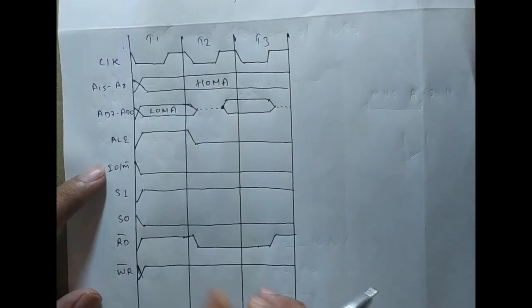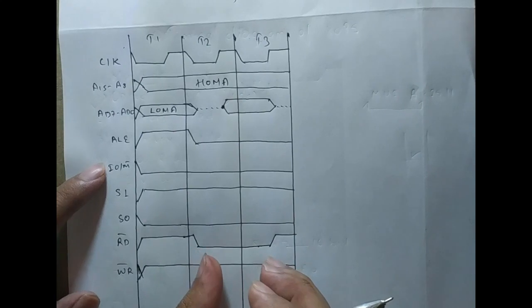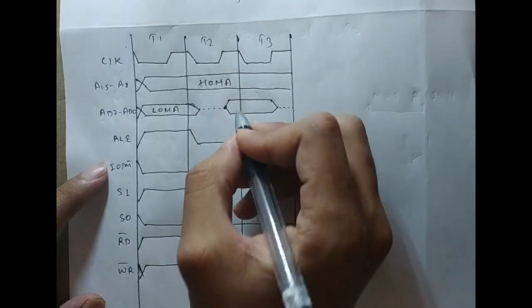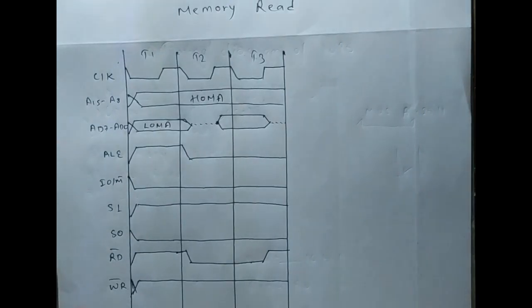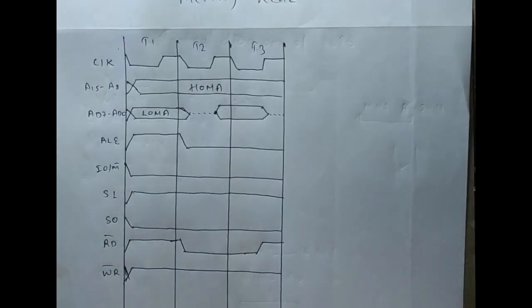Making this read signal low will request for data, because our memory is pointed so you can read the data. So this is the timing diagram for memory read.